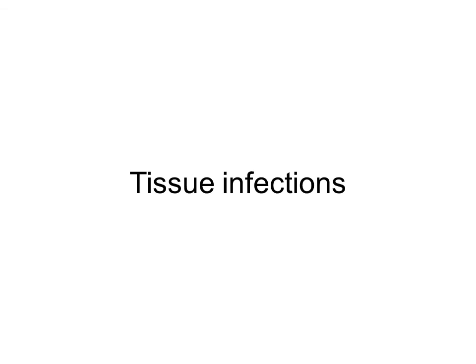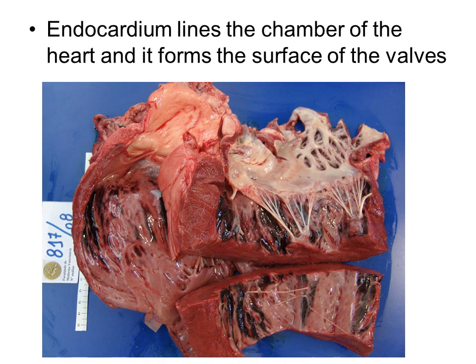Now we're going to look at tissue infections. We just concluded talking about bloodstream infections caused by bacteria. Now we're going to look at what happens when bacteria infect the tissue. Tissue involved in the cardiovascular system would be tissue that makes up the blood vessels, the chambers of the heart, or the actual valves of the heart.